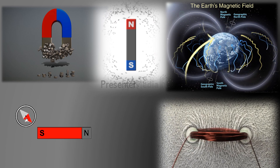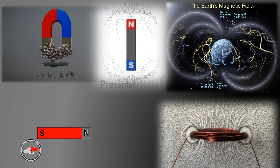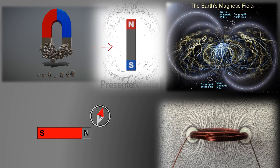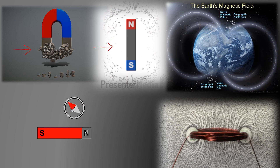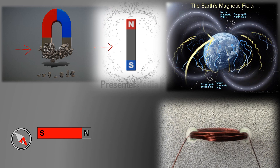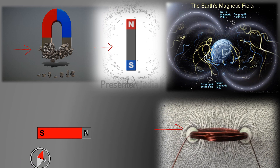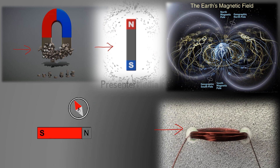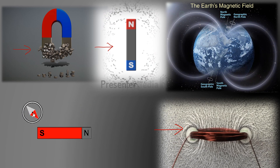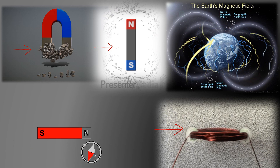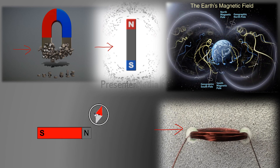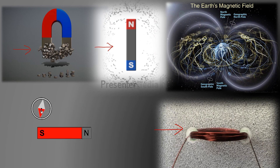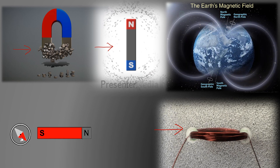We know that some magnets have a permanent magnetic field, such as a bar magnet and a horseshoe magnet. However, a conductor or a wire can also act as a magnet when a current flows through them. This is called an electromagnet, where they will only produce a magnetic field when current is applied.